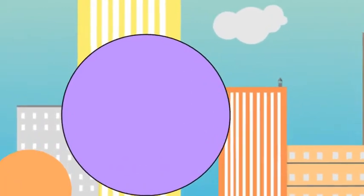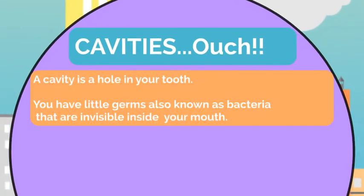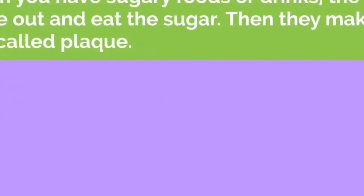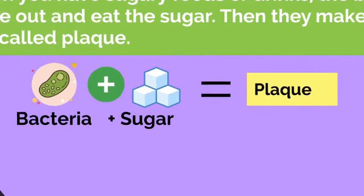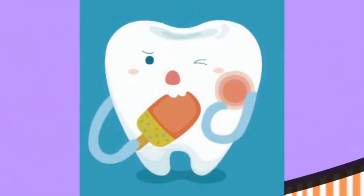Now let's talk about tooth trouble. What gets our teeth in trouble? Cavities — ouch! A cavity is a hole in your tooth. You have little germs, also known as bacteria, that are invisible inside your mouth. When you have sugary foods or drinks, the bacteria come out and eat the sugar. Then they make a sticky film called plaque. Bacteria plus sugar equals plaque. Over time, plaque makes acid that creates a hole or cavity in your tooth. Cavities can be very painful and the hole can grow larger over time. Ouch!